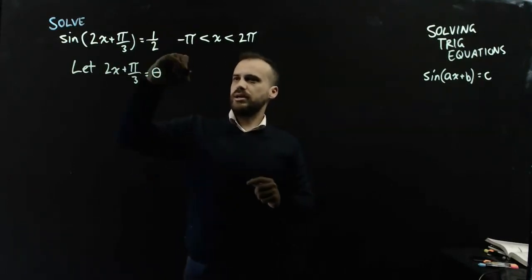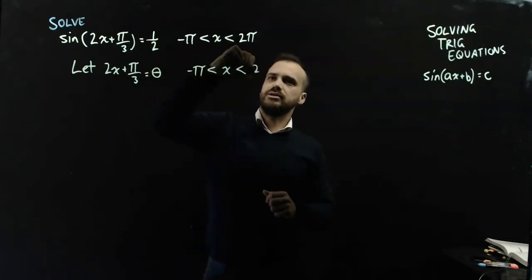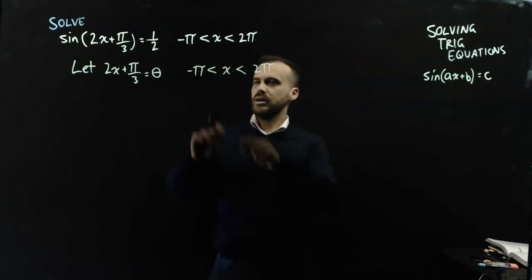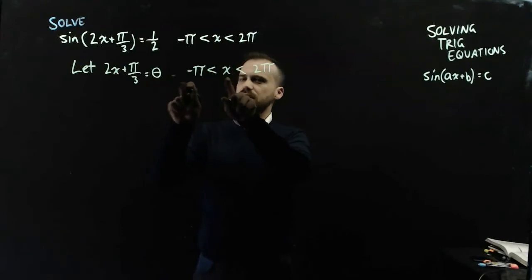So think about it this way: negative pi is less than x, which is less than 2pi. Alright, so far so good. But I'm not solving for x, I'm solving for theta, so I need to convert x into theta.